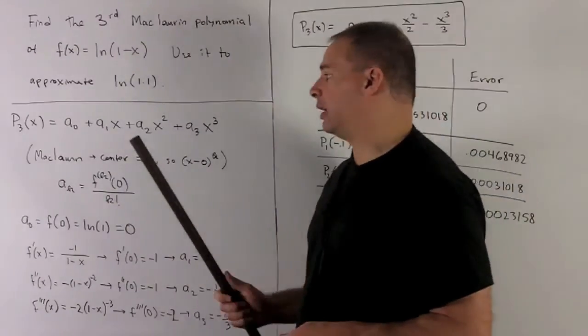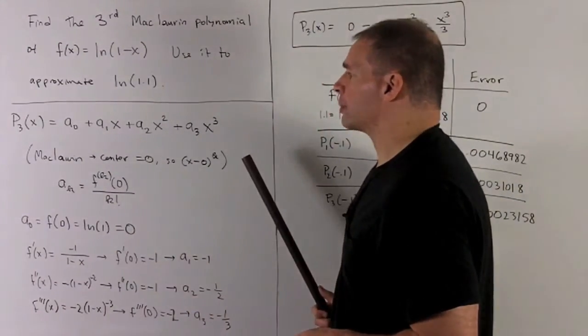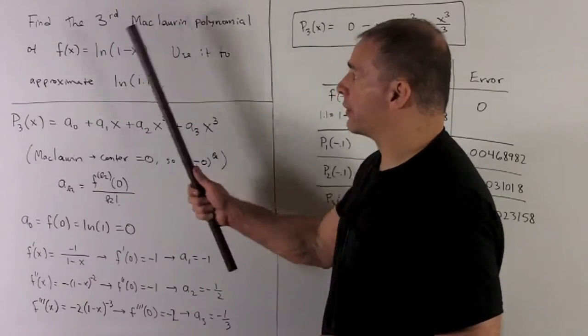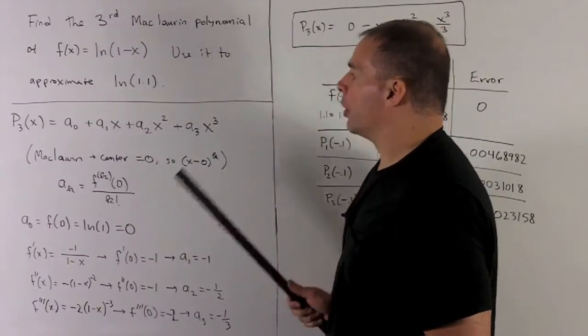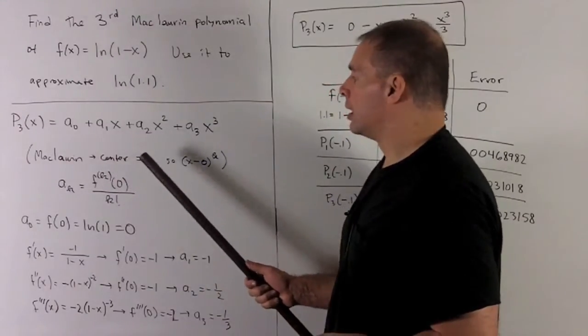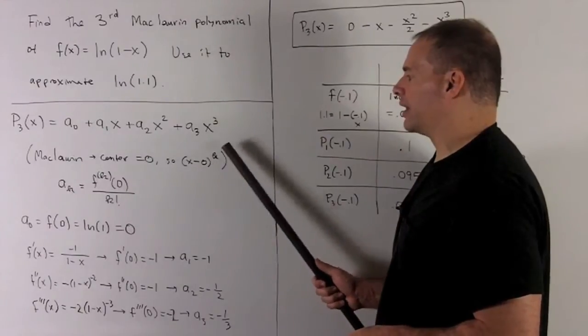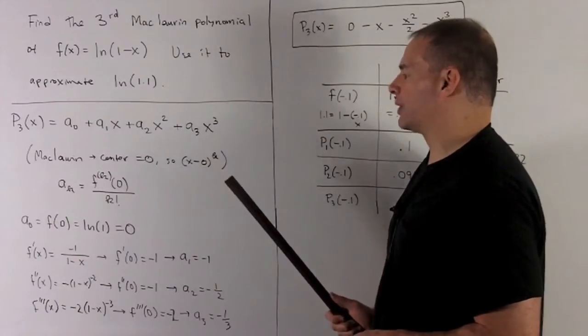Let's take a look at our recipe for getting Maclaurin polynomials. Here we're asked to only find the third Maclaurin polynomial. Note, Maclaurin means center is going to be equal to 0. So our terms are going to look like x minus 0 raised to the kth power, or just powers of x.